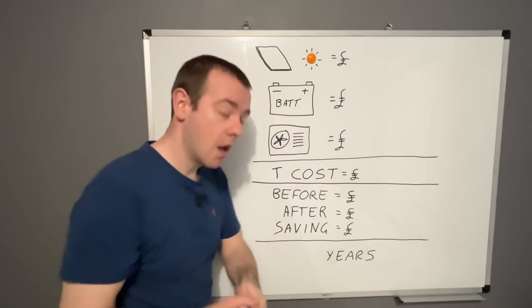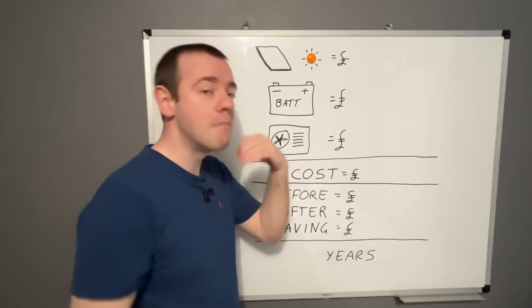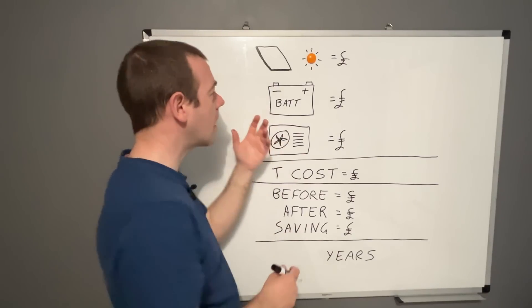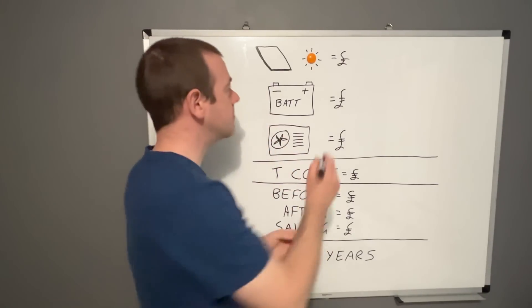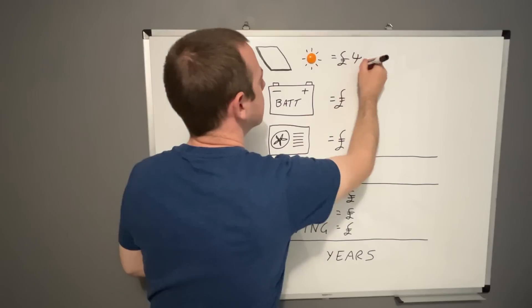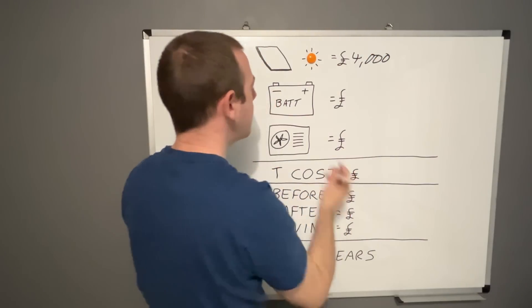So let's start with the solar panels, what they would cost me to get my system again, which is a relatively budget system, I should say, that is £4,000. So that's a lot of money.